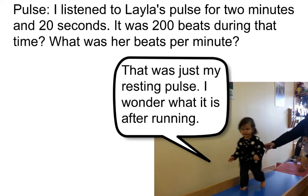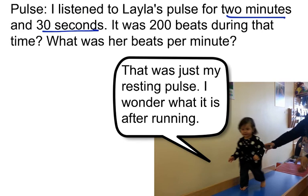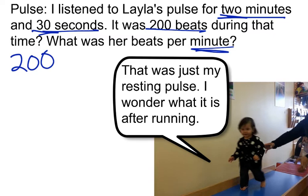Let's look at a pulse problem. I listened to Layla's pulse for 2 minutes and 30 seconds — it was 200 beats during that time. What was her beats per minute? Looking at the pulse, we know it was 200 beats in 2 minutes and 30 seconds. I need to convert that to minutes. I can first convert everything to seconds and then divide by 60, or I can recognize that 2 minutes and 30 seconds equals 2 and a half minutes.